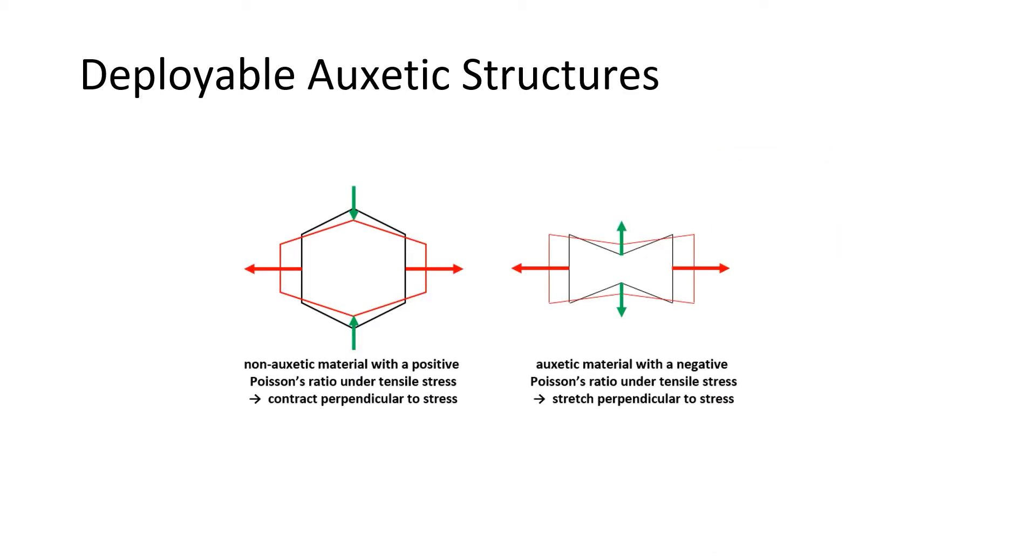Our approach is based on a mechanical property called auxetic. This term describes the mechanism with negative Poisson's ratios, which means when stretched in one direction, the mechanism will expand in all directions.